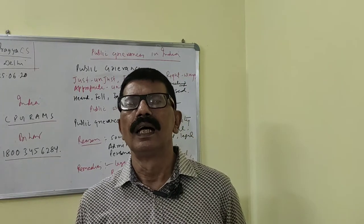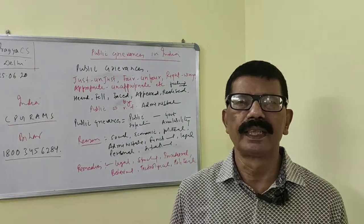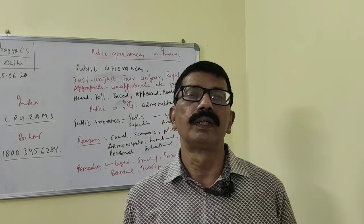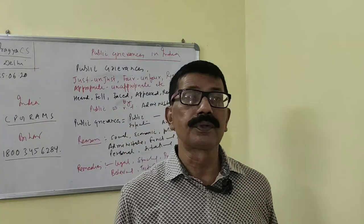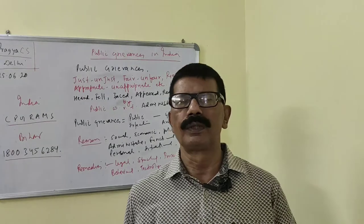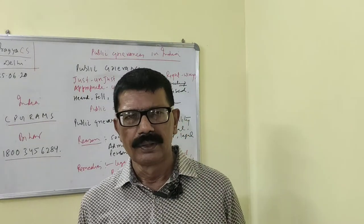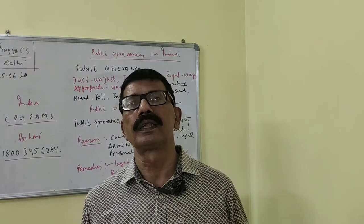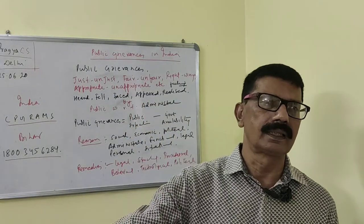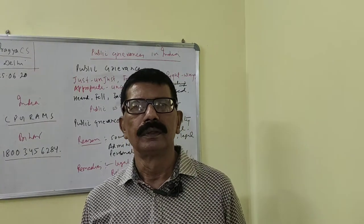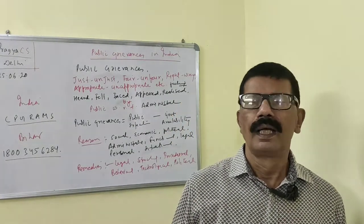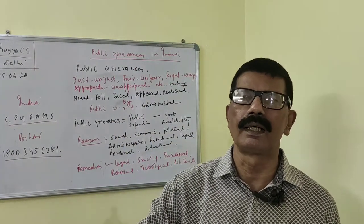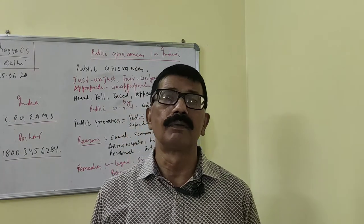In 1966, under Chairman Morarji Desai, the Administrative Reform Commission was established. It gave recommendations with regard to the establishment of Lokpal and Lokayukta institutions in India. In 1968-69, for the first time this bill was introduced, and it took around 32 years to get it enacted — it was finally enacted in 2014. It was based on the Ombudsman of Sweden, following a parliamentary commissioner pattern in which one individual can approach it for the redress of public grievances.